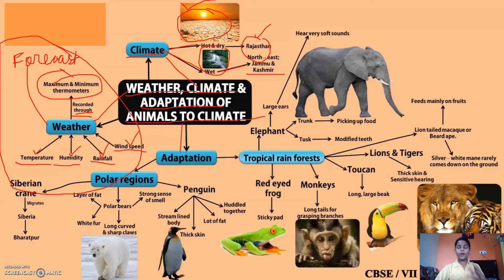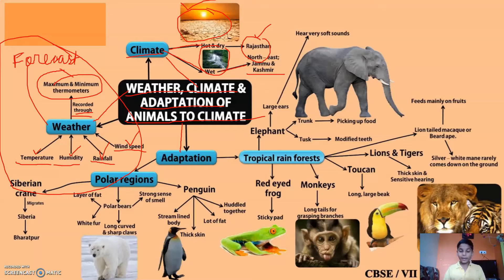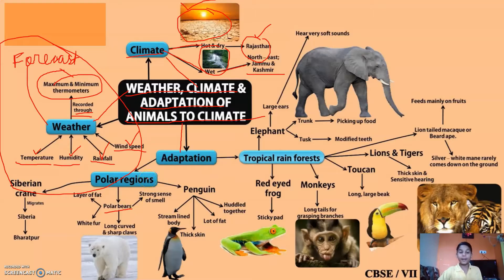Now let's come to adaptations of animals to climate. Adaptations can be discussed in two parts: polar regions and tropical rainforest. Adaptation means how animals adapt themselves to their environment. Just as human beings adapt — some live in Jammu and Kashmir where it is very cold, and some live in Rajasthan where it is very hot — animals also adapt themselves.